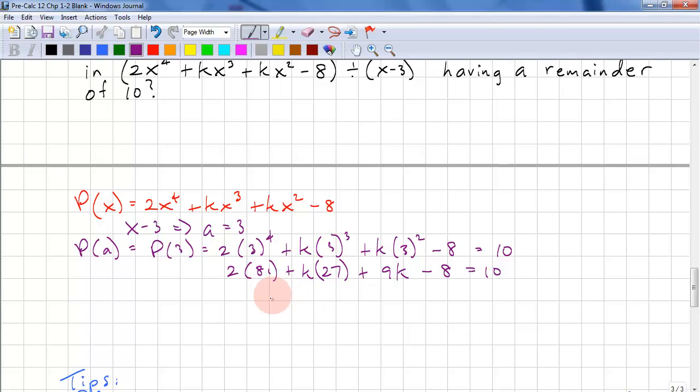This is 162 plus 27k plus 9k equals 18. So we have 36k equals negative 144. So k equals negative 4.